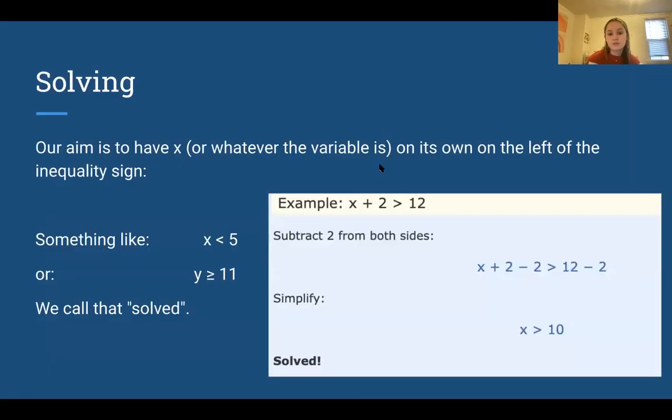So when we solve inequalities, our goal is to have x, or whatever the variable may be, on its own side, on the left of the inequality sign. So you want something like x is less than 5, or something like y is greater than or equal to 11. And that's how you solve an inequality.